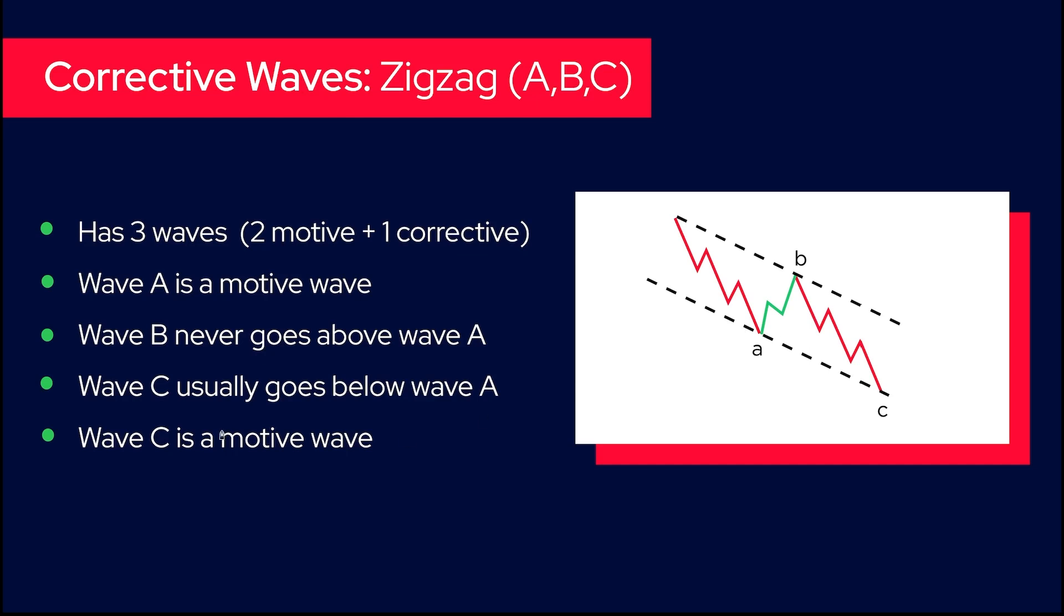Wave C usually goes below wave A. It's not always like this - you can have a zigzag that stops here, but usually the C wave is actually an impulse itself. Wave C is a motive wave, usually an impulse. It can be an ending diagonal as well, but usually C waves in the zigzag are very strong.